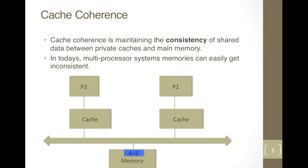What is cache coherence? It is maintaining consistency between the private cache and the main memory. There are instances where the shared data copy can be invalid. Consider a multiprocessor system with two microprocessors. Suppose an address A has a value 5 in its main memory at start, and P2 instantiates a read for the address A.